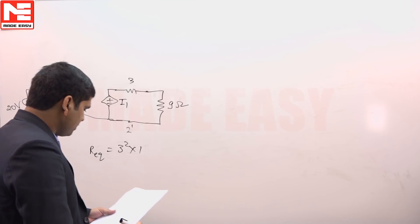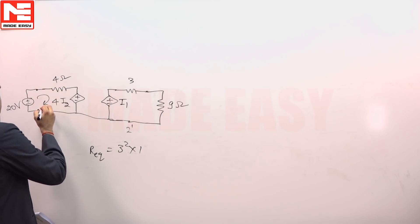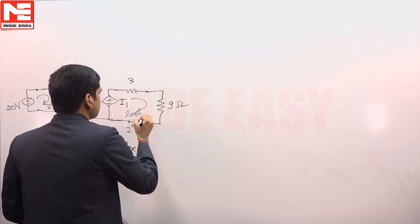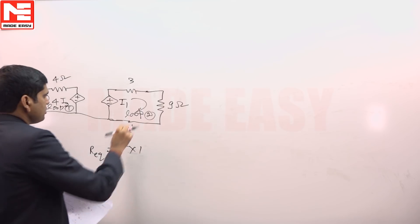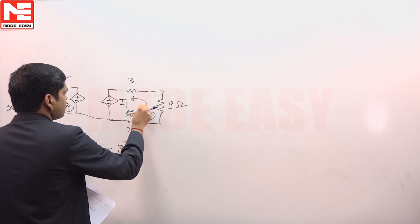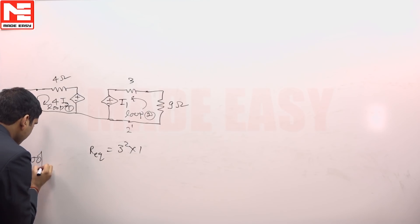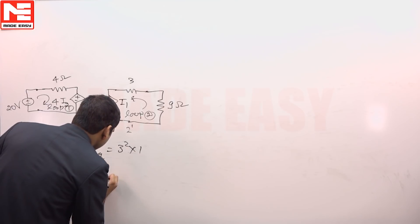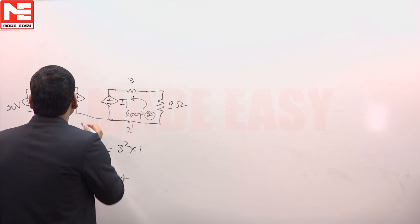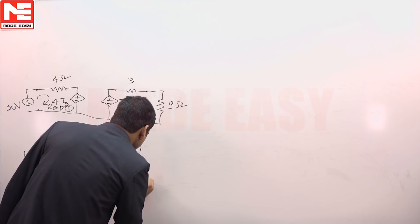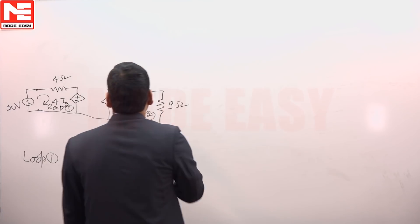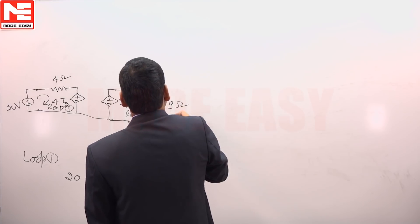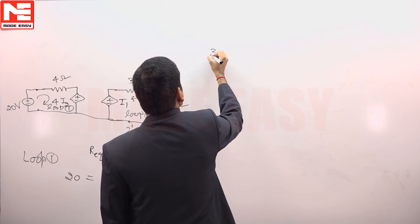We have certain equations. If it is loop 1 and loop 2, then in loop 2 the current direction is like this. In loop 1, we can write V1 that is 20 volt is equal to 4 into I1 plus 4 into I2, equation number 1. Here we can write this I2, 3 into I2.